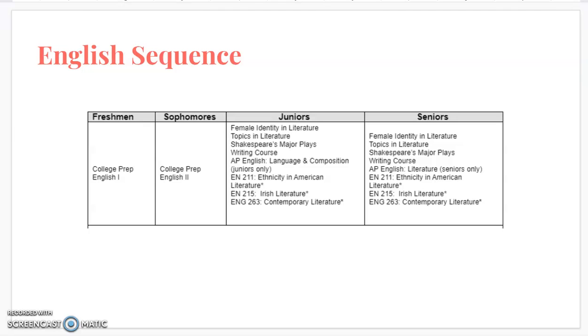Alright, now we will get into the individual sequences of each of the subject areas. So specifically for juniors and seniors, you will see that there is a multitude of options available to students. All of these options with two considerations are semester long options. So if you identify one of these courses that looks interesting to you, you probably need to identify a second one to fulfill that second semester. The exception to that is the AP English language and composition as well as the AP English literature course. Both of those are year-long courses where you need to sign up for both the first semester and the second semester of that class. All of the other classes are going to be semester long.